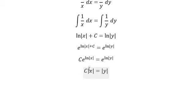We know that the constant may be positive or negative. So in this situation, we can write C times x equals y.